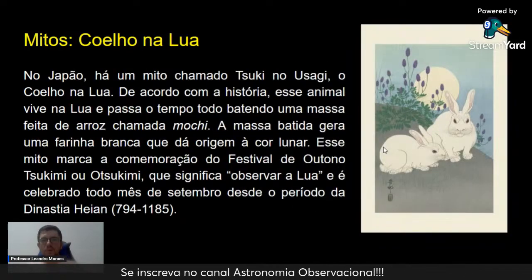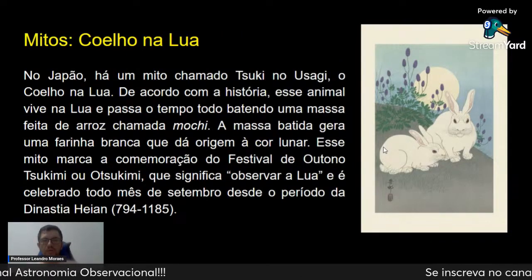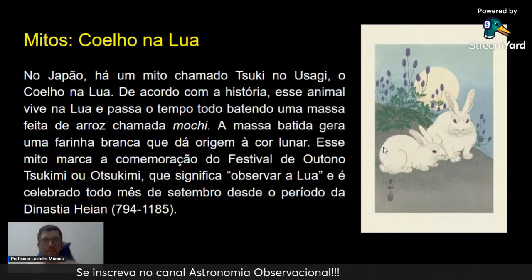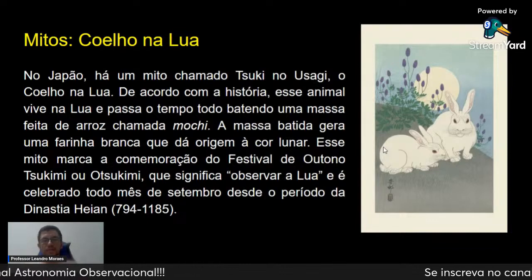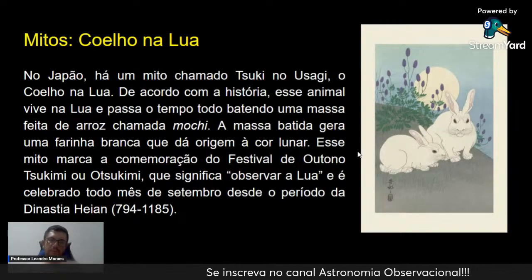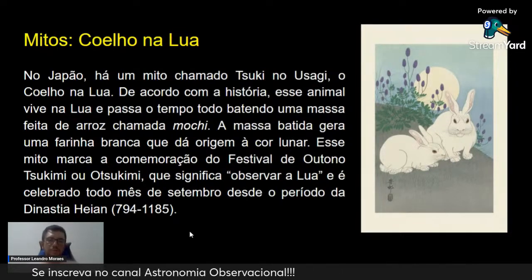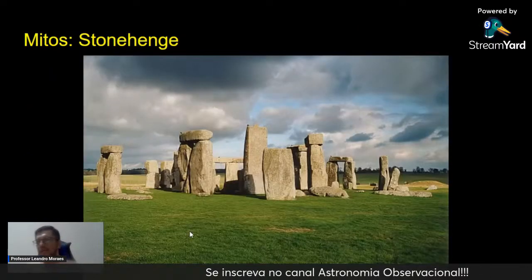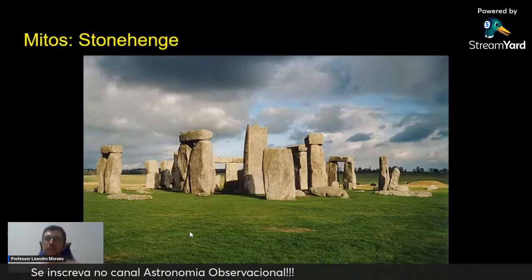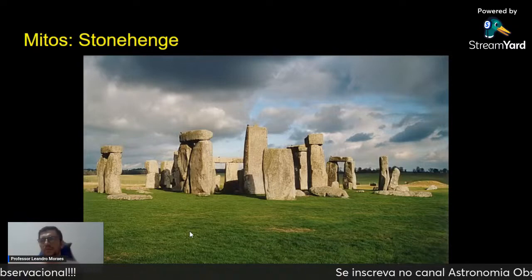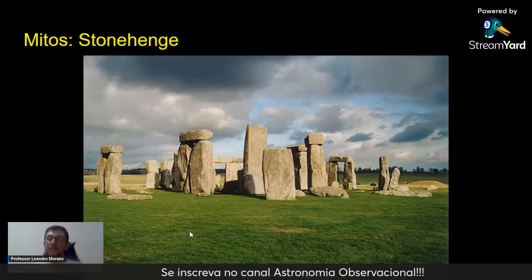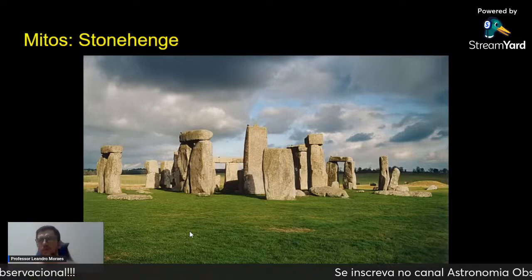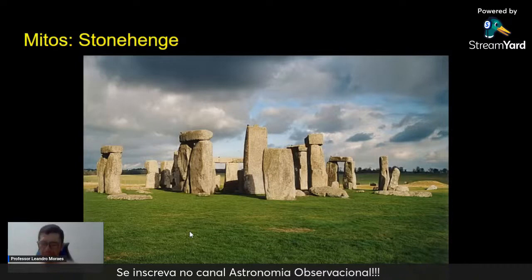Temos também o Coelho na Lua, lá no Japão — o Tsuki no Usagi. De acordo com a história, esse animal vive na Lua e passa o tempo batendo uma massa de arroz chamada Moshi. A massa gera uma farinha branca que dá origem à cor da Lua. Esse mito marca o Festival de Outono, o Tsukimi, que significa observar a Lua e é celebrado todo mês de setembro. Há também vários outros mitos, como em Stonehenge e nas culturas indígenas do Brasil.